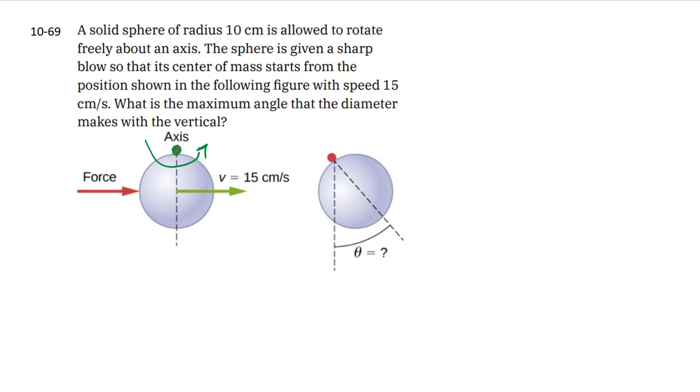As it swings up, gravity slows it down, reaches a maximum angle, and then it comes back down. That's what they're asking us: when it comes to a stop at the top, how high up is it in terms of angles.